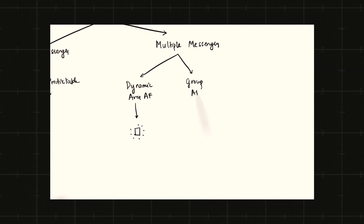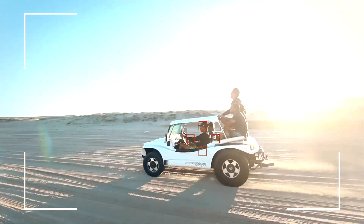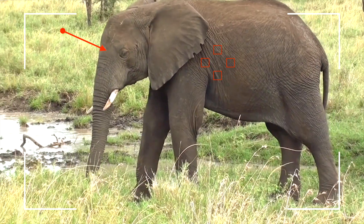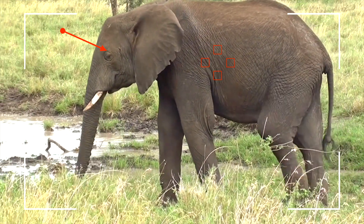Option number three is using a group of messengers. This is different from the previous case because here all the messengers are of equal stature and they work together as a unit — effectively a single point focus but of a larger area. Group AF becomes useful when you are tracking a bigger subject, like a car or an elephant. But this is not an option I usually go for, because even if you are tracking a big subject, your point of interest is still likely to be a small part of that big subject.